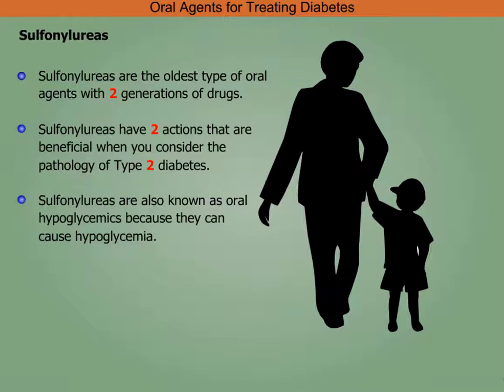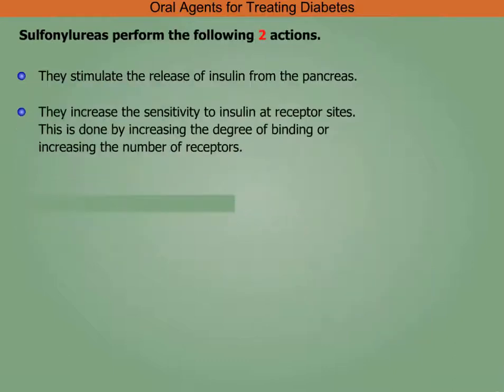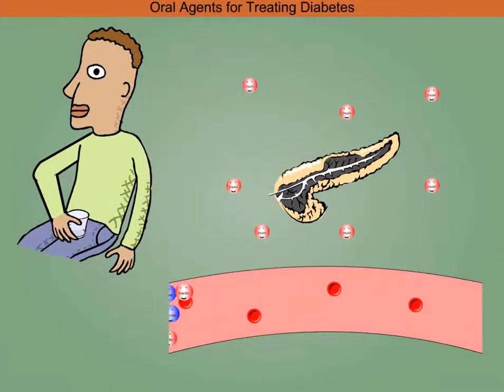Sulfonylureas have two beneficial actions considering the pathology of type 2 diabetes. Also known as oral hypoglycemics because they can cause hypoglycemia, they stimulate the release of insulin from the pancreas and increase sensitivity to insulin at receptor sites by increasing the degree of binding or increasing the number of receptors.